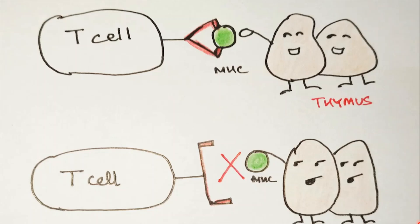If your T cells can recognize your MHC presented in the thymus, they pass the positive selection. And if they don't, they are destroyed.